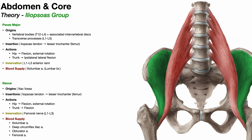Now for the iliacus — shown in green here, you can see it originates off of the iliac fossa. This is actually a convergent muscle, and technically the psoas major is convergent as well, but the iliacus has that typical convergent shape with a very broad origin sitting in the iliac fossa. Going distally, it comes to a musculotendinous junction that starts to fuse with that of psoas major, eventually forming a common tendon — the iliopsoas tendon — which inserts on the lesser trochanter of the femur.